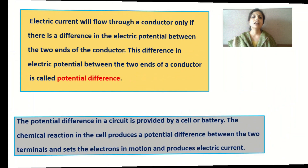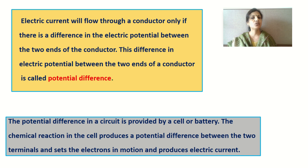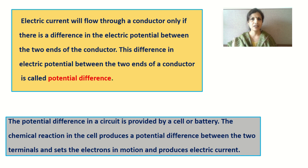Electric current will flow through a conductor only if there is a difference in electric potential between the two ends of the conductor. This difference in the level of number of electrons at one particular end is created with the help of a cell or battery. This difference in electrical potential between the two ends of a conductor is called potential difference, and it is provided by a cell or a battery. Inside the cell, certain chemical reactions take place, and due to these chemical reactions, the electrons start moving from the negative terminal to the positive terminal of the cell or battery.